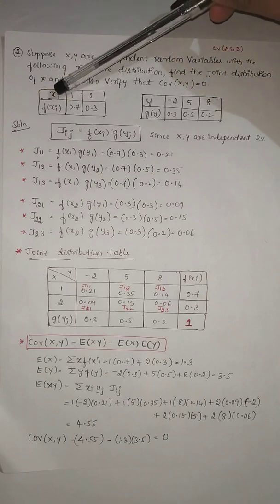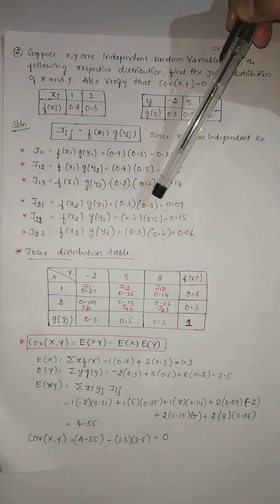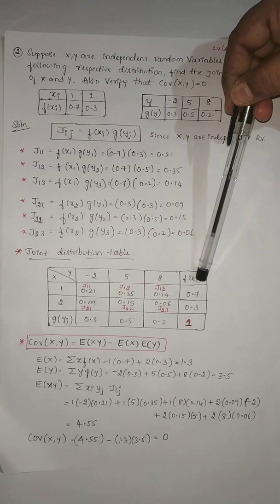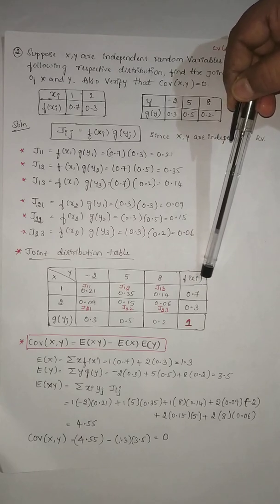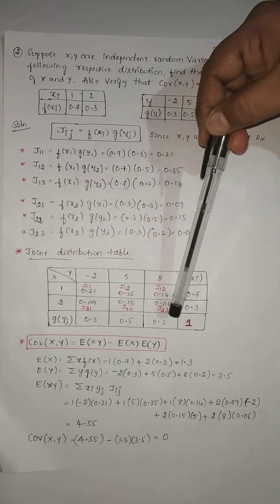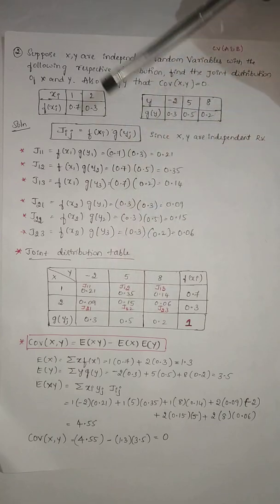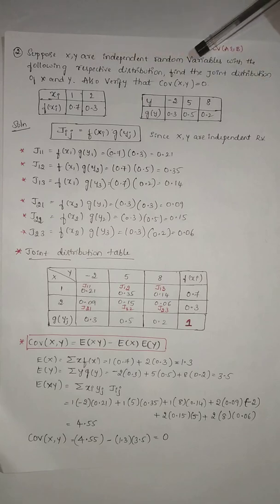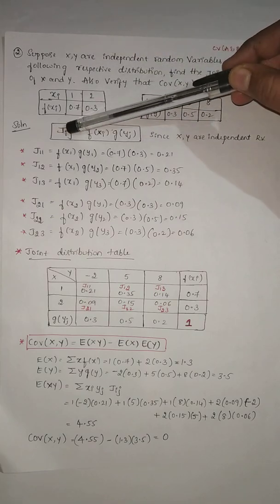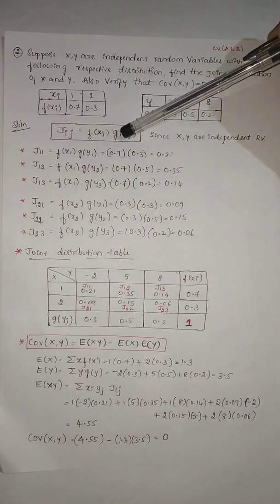They have given distribution of x and distribution of y. To write the joint distribution table, you need elements j11, j12, j13, j21, j22, j23. To calculate these, they have given one condition: if x and y are independent random variables, then to find out j_ij, you have the formula f(x_i) multiplied by g(y_j).